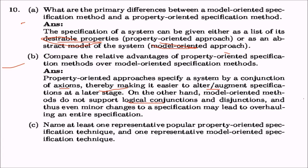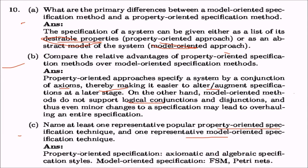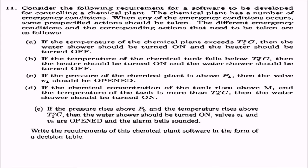Even minor changes to a model-oriented specification can lead to complete overhauling and modification of the entire specification. For representative techniques: property-oriented specification uses axiomatic and algebraic specification styles, while model-oriented specification includes FSM (Finite State Machines) and Petri Nets.